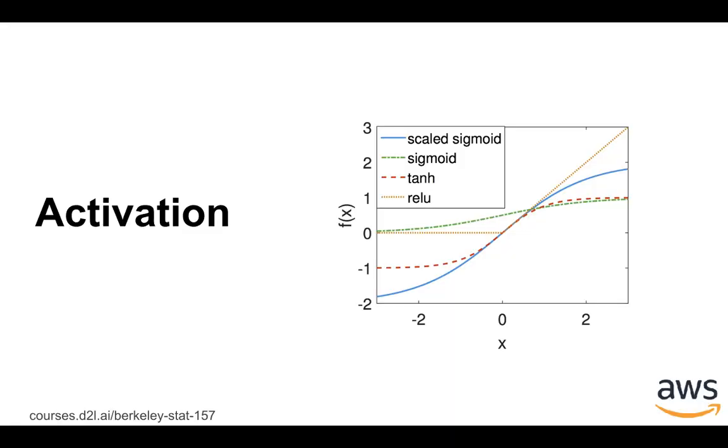So far we only examined identity activation functions. We know that if we use identity activation function, no matter how many layers we have, it's always equal to a single layer.